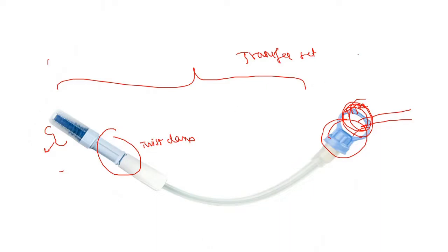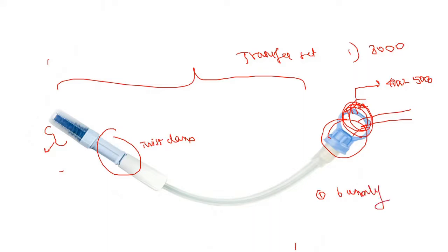The cost in India is around 3,000 rupees, and the titanium adapter costs approximately 4,000 to 5,000 rupees. This transfer set is usually changed every six months, or whenever there is an episode of peritonitis or if any infection is suspected.